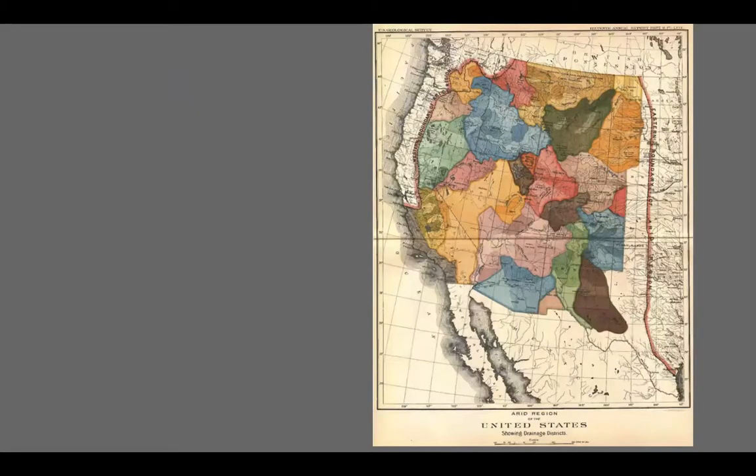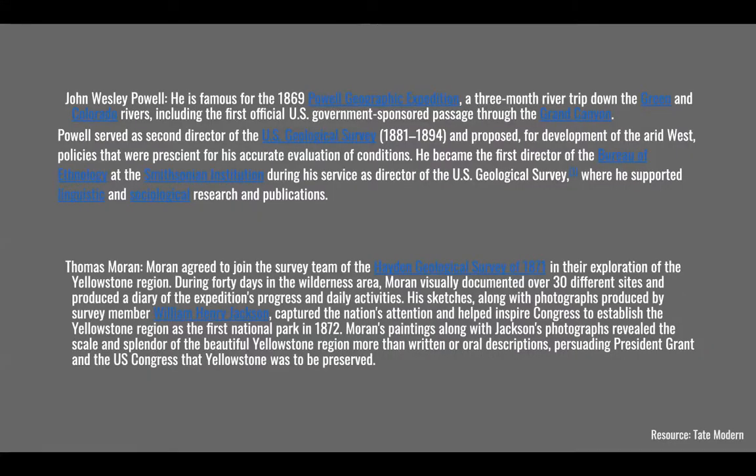John Wesley Powell drew a watershed map for Congress — he was the explorer and scientist that Thomas Moran was with. At the time, Powell said this is the arid region and cannot be settled the way the East Coast was settled. But congressional representatives said these new scientists don't understand the practical problems of managing public lands. So we have the Four Corners region, and they just laid a grid over the western United States — there's always been a little resistance to the science here.